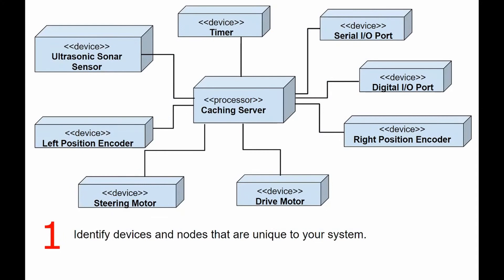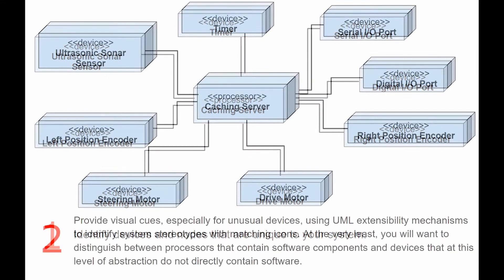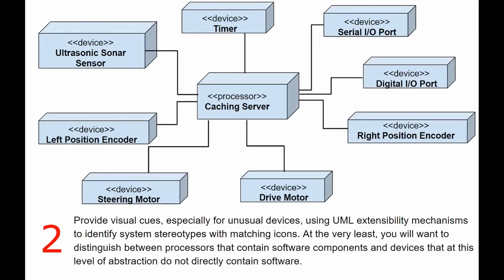These are the steps normally taken to model an embedded system. Identify devices and nodes that are unique to your system. Provide visual cues, especially for unusual devices, using UML extensibility mechanisms to identify system stereotypes with matching icons. You will also want to distinguish between processes that contain software components and devices that, at this level of abstraction, do not directly contain software.